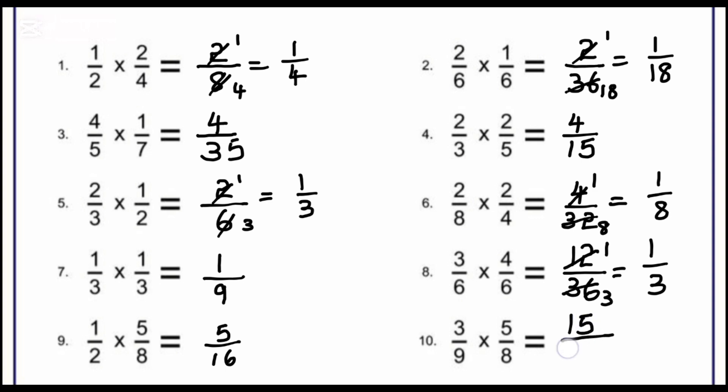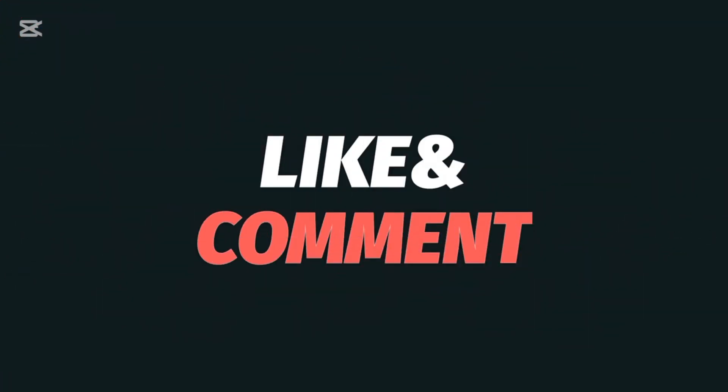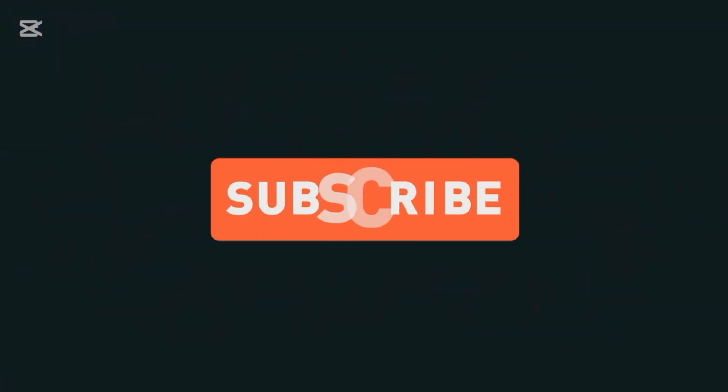Similarly, the next question gives 15 in the numerator and 72 in the denominator, so the final answer is 15/72. This is how we can do multiplication of fractions — proper fractions or improper fractions. Thank you for watching.